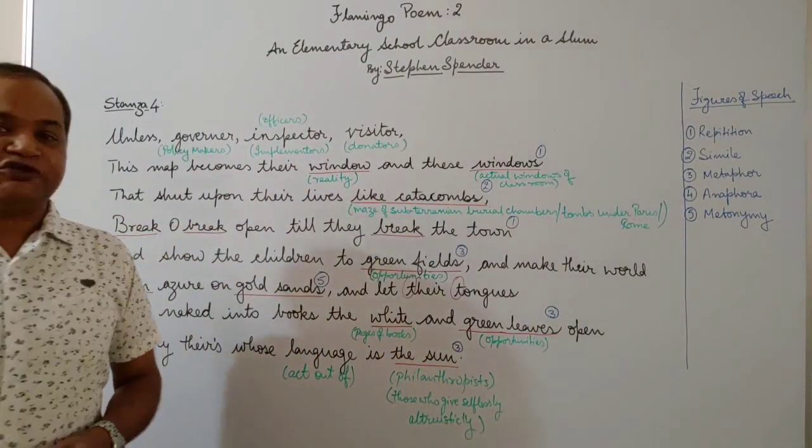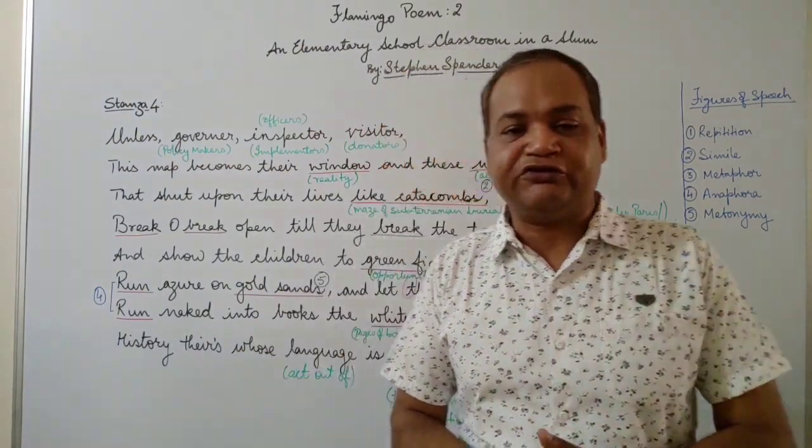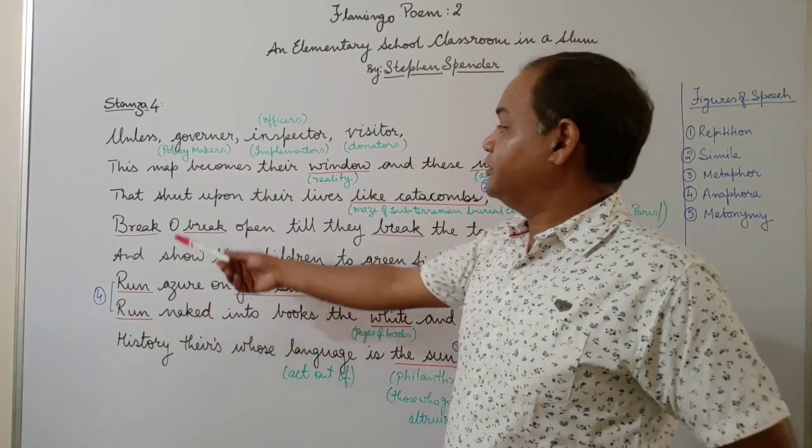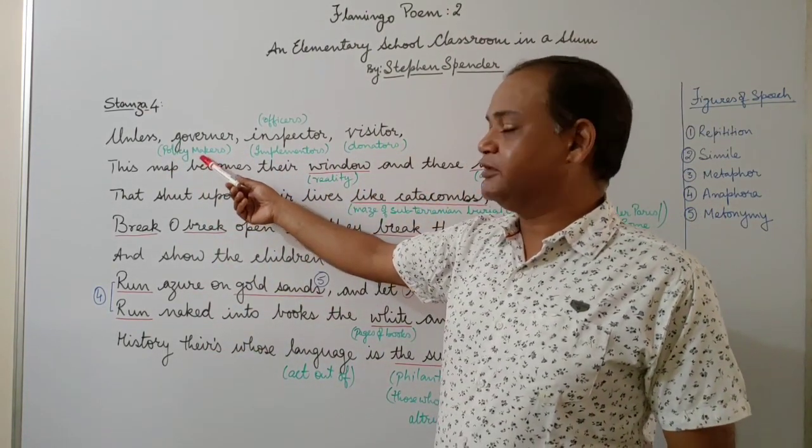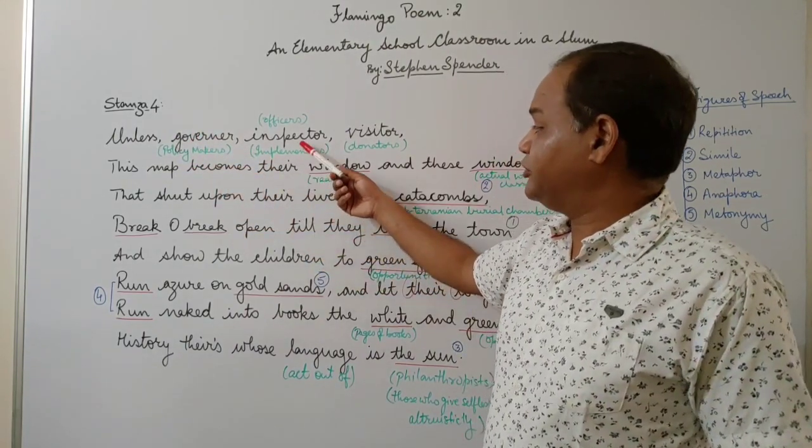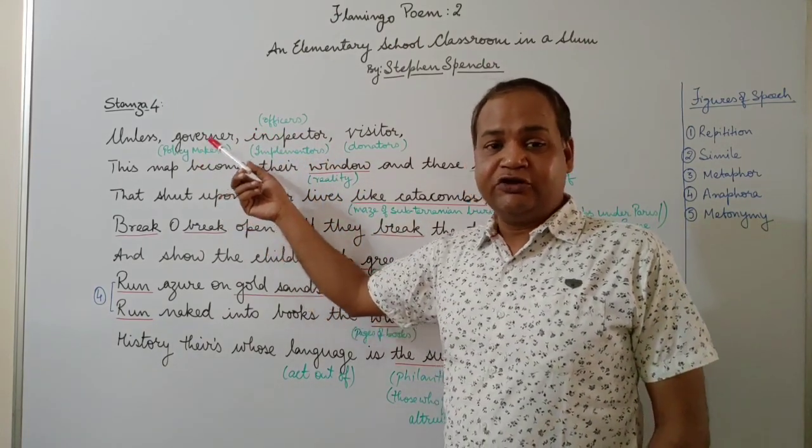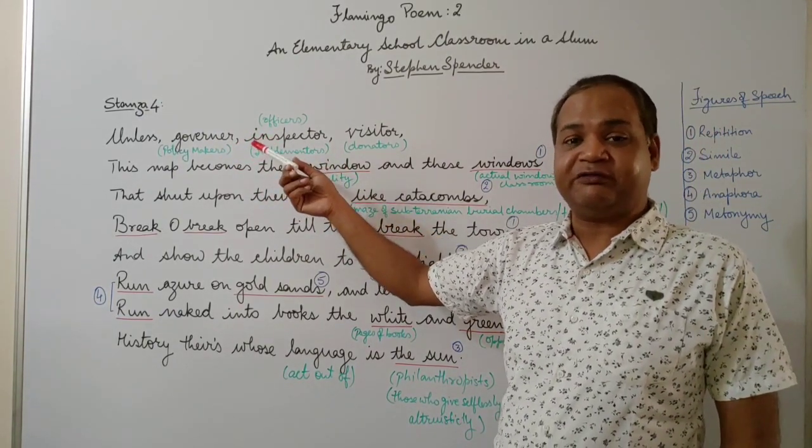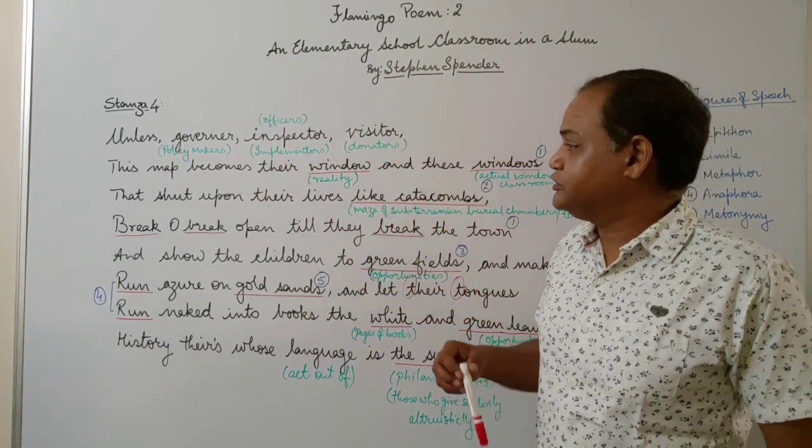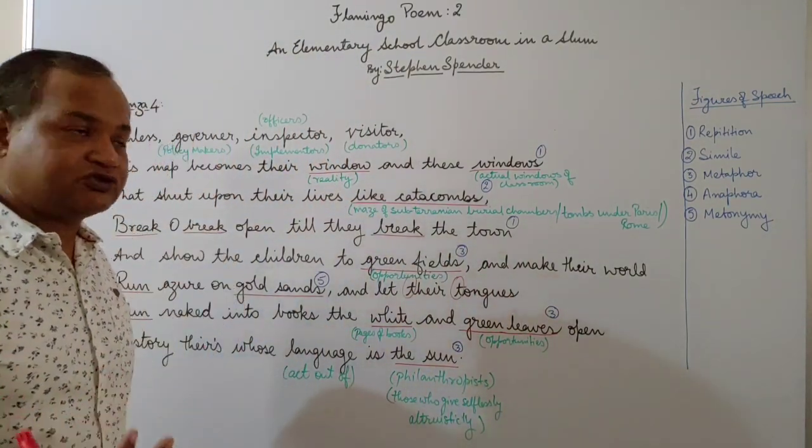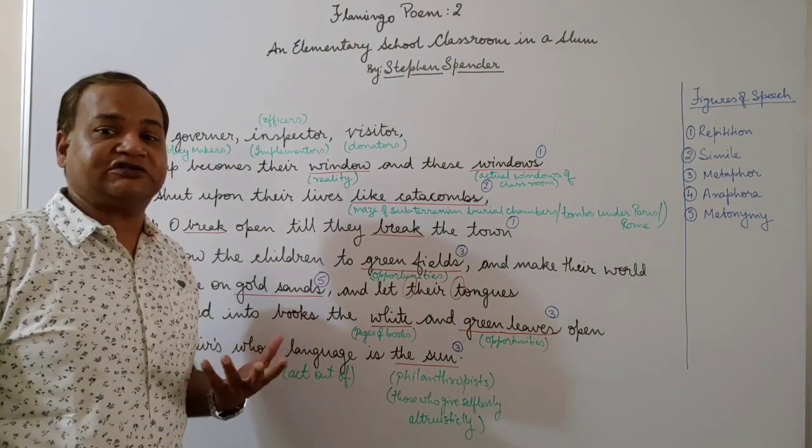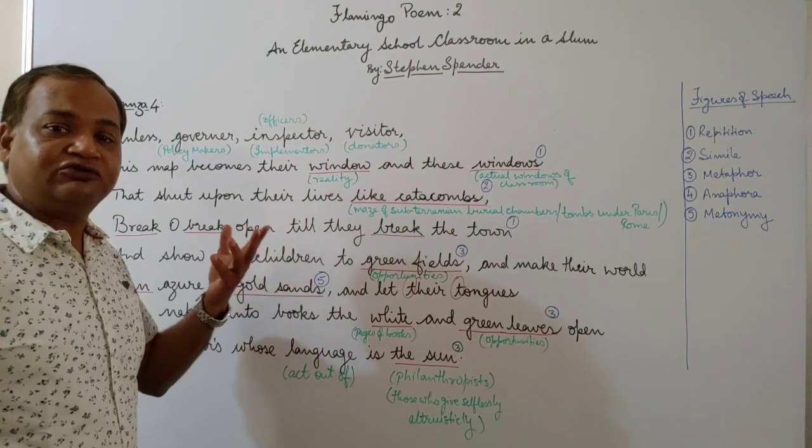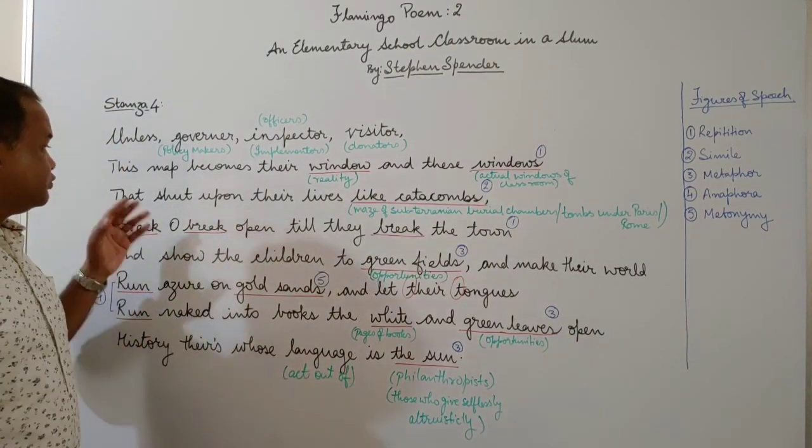Welcome back to the classroom. Let us look at the fourth and the final stanza of the poem. In this poem, the poet is trying to give us a solution to all the problems and difficulties that he has described earlier with the children and the life in the slum. So he's talking here: 'Unless governor, inspector, visitor.' Who's the governor? Governor is the policy maker, part of the government and the implementers. Inspectors—implementers, the officers, the bureaucracy which is responsible for implementing the policies that the government makes and ensuring that the money that is sent for the benefit of these people reaches them and is utilized properly. And then the third category of people he talks about is the donators, those who give freely out of their own sweet will, altruistically without necessity of receiving anything in return.